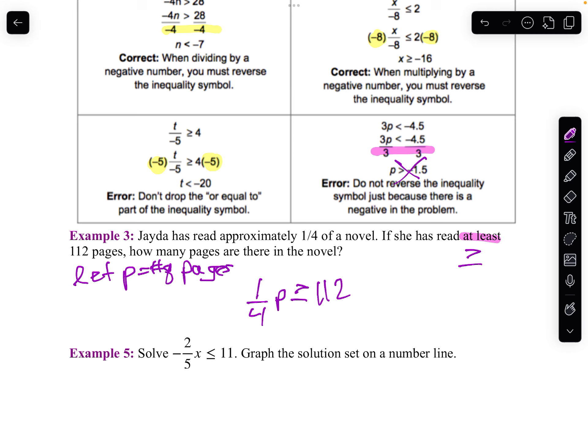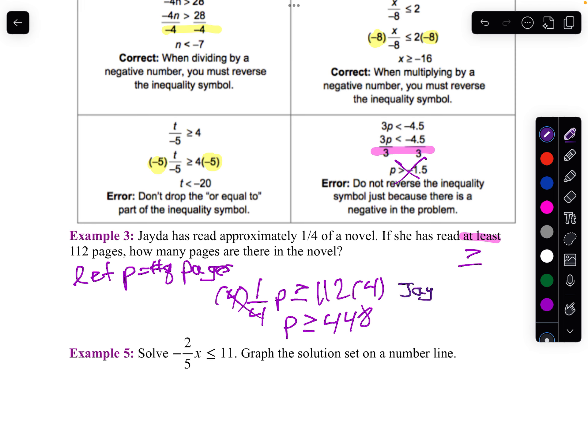And so to solve that, what do we do? Well, we multiply by 4. So if we multiply both sides by 4, P is greater than or equal to, let's take 4 times 112. That would be 448. And we get that for an answer. So I could say, let's write that as a sentence. Jada has read at least 448 pages.